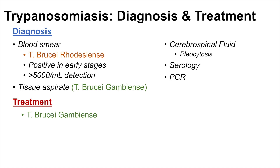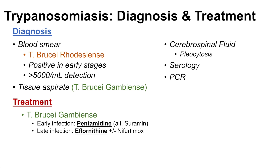If the patient has been found to be infected with Trypanosoma brucei gambiense and it's determined to be an early infection, we can use pentamidine. If we don't use pentamidine, we could use suramin. If it's been found to be a late infection of brucei gambiense, we would have to use eflornithine plus or minus nifurtimox. The reason we use eflornithine instead of pentamidine is because pentamidine does not cross the blood-brain barrier well, whereas eflornithine does. So in order to treat a CNS-involved infection of trypanosomiasis, we need something that can cross the blood-brain barrier — making eflornithine the appropriate choice.